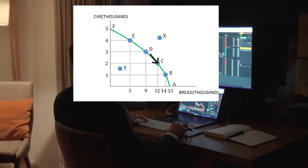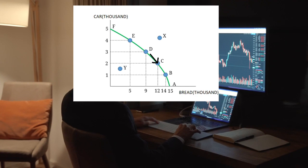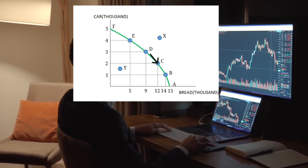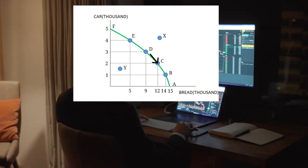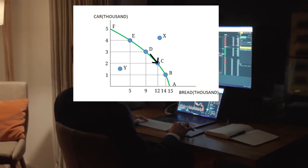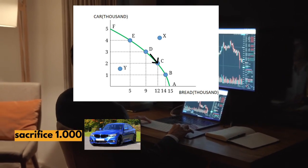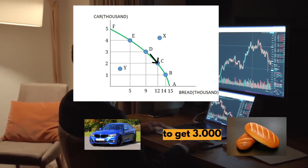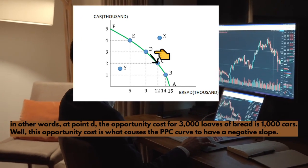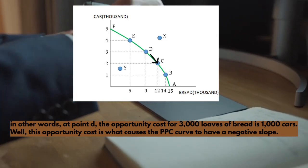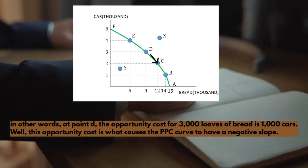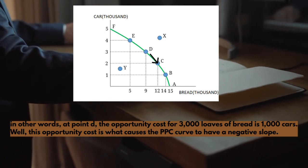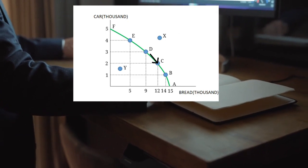The production possibility curve also indicates the opportunity cost of one item due to producing another. Let's take the same example. When the economy moves from point D to point C, it means the economy has sacrificed 1,000 units of cars to get an additional 3,000 pieces of bread. In other words, at point D, the opportunity cost for 3,000 loaves of bread is 1,000 cars. Well, this opportunity cost is what causes the PPC curve to have a negative slope.